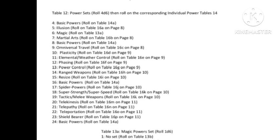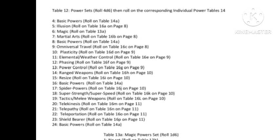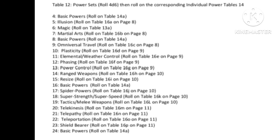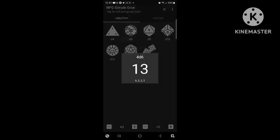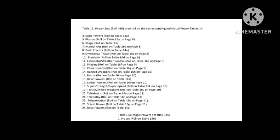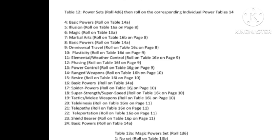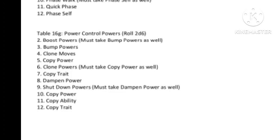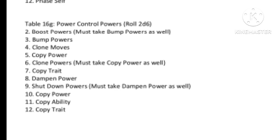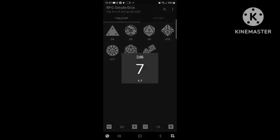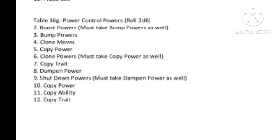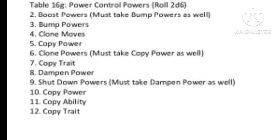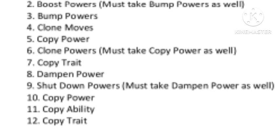Here we go with our final power — rolling 4 dice. We have Multiversal Travel as an elemental, which kind of makes sense. We got a 13, which is going to be Power Control. Let's take a look at the Power Control powers — rolling a 7 gives us Copy Trait. So we have: Copy Trait, Multiversal Travel, Extra Limb, and an Immunity.